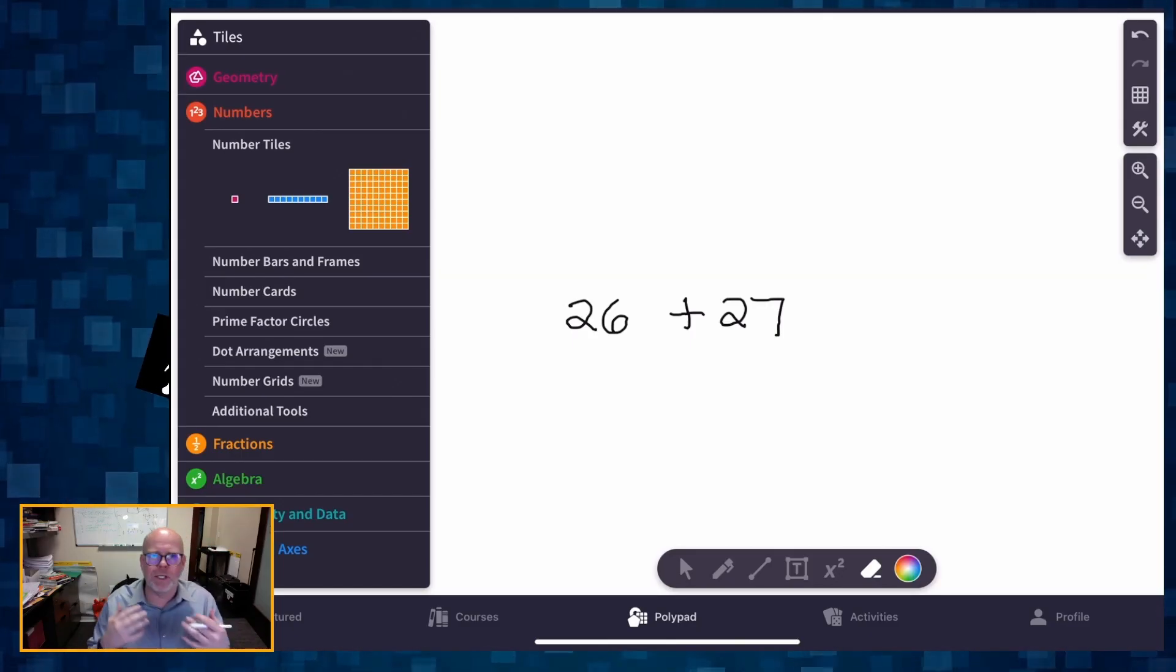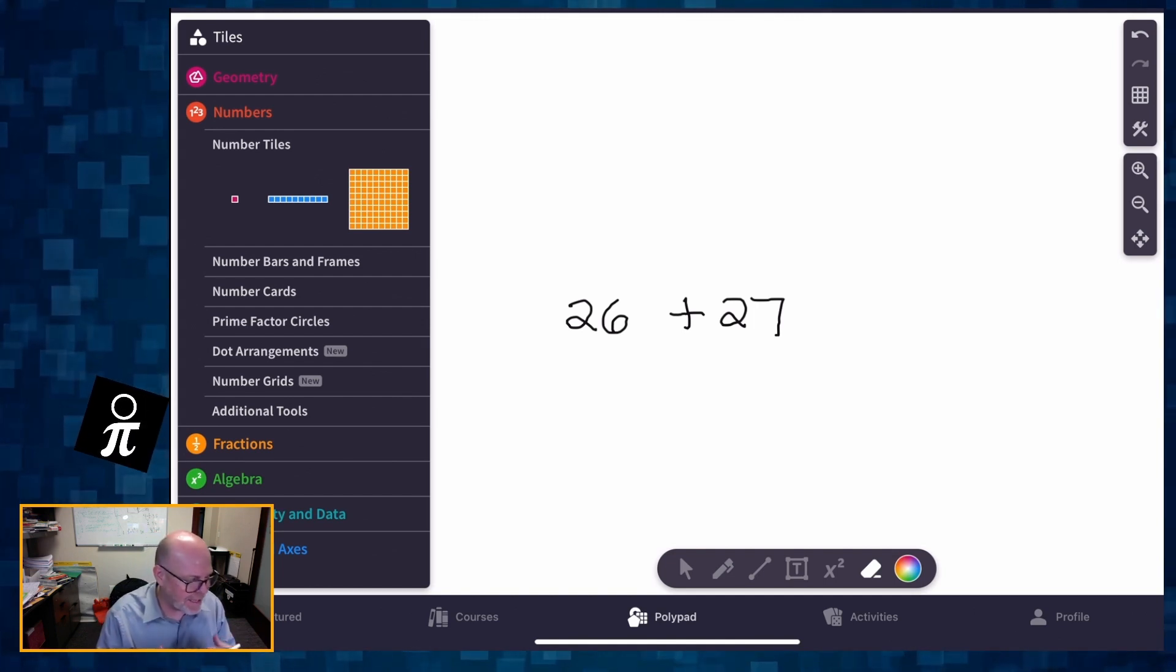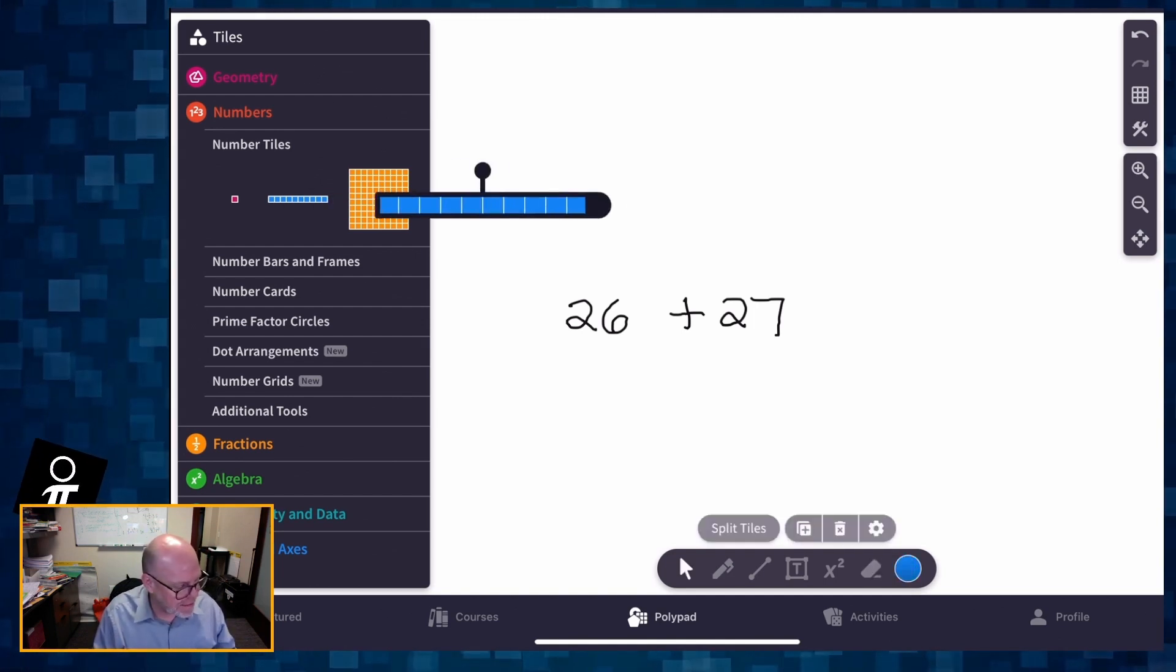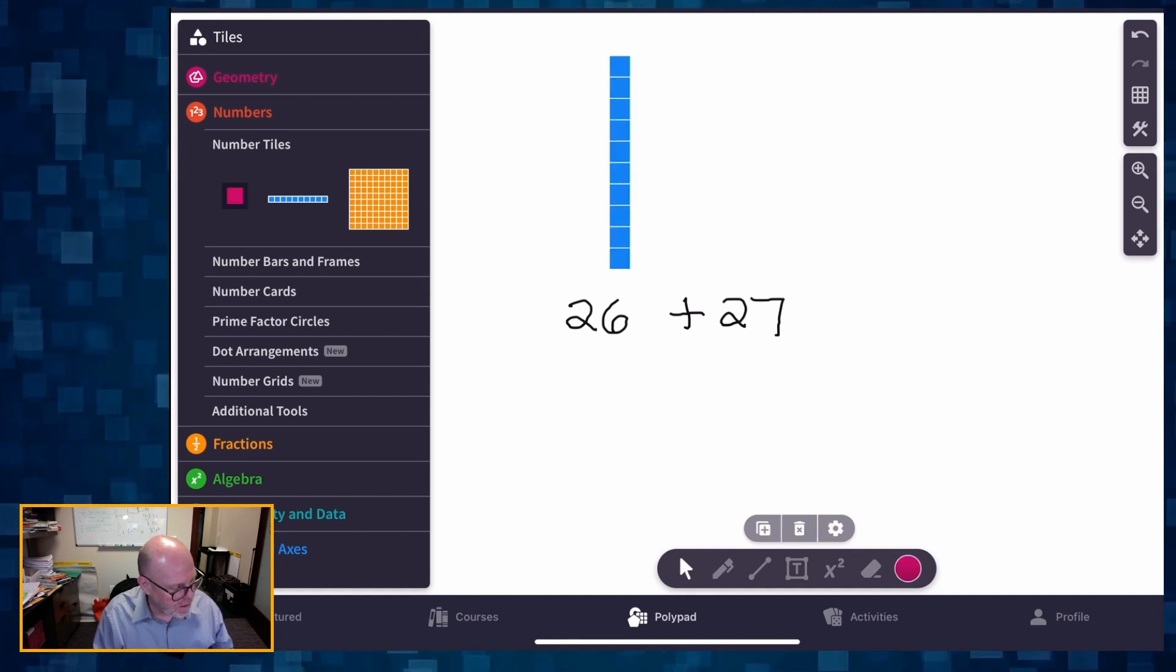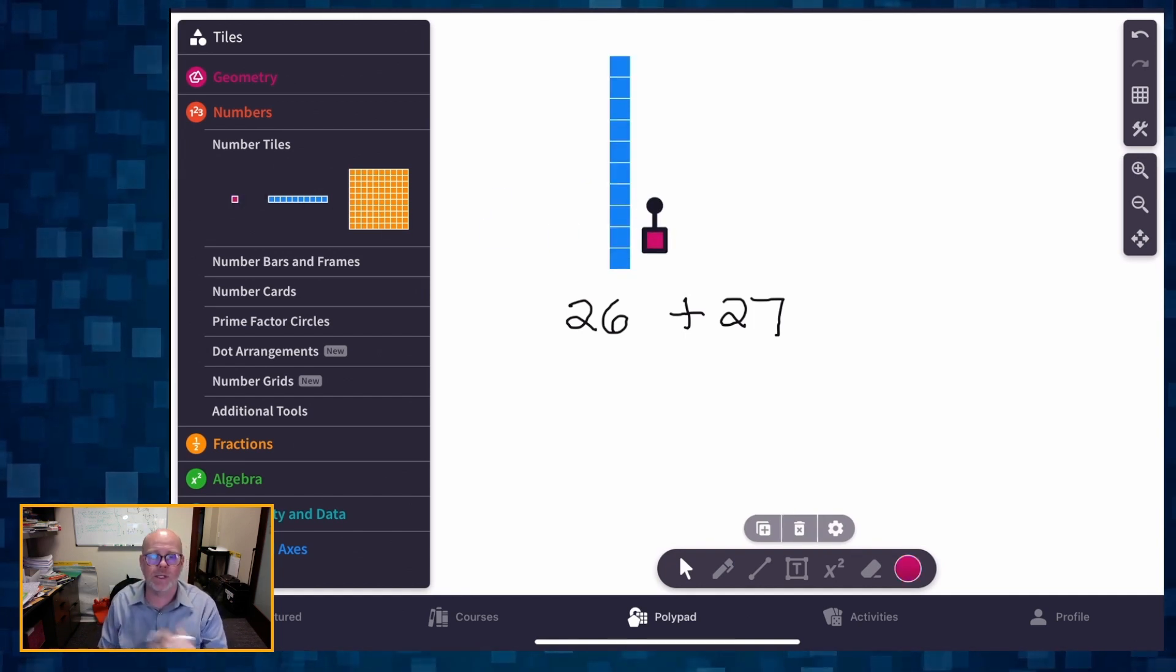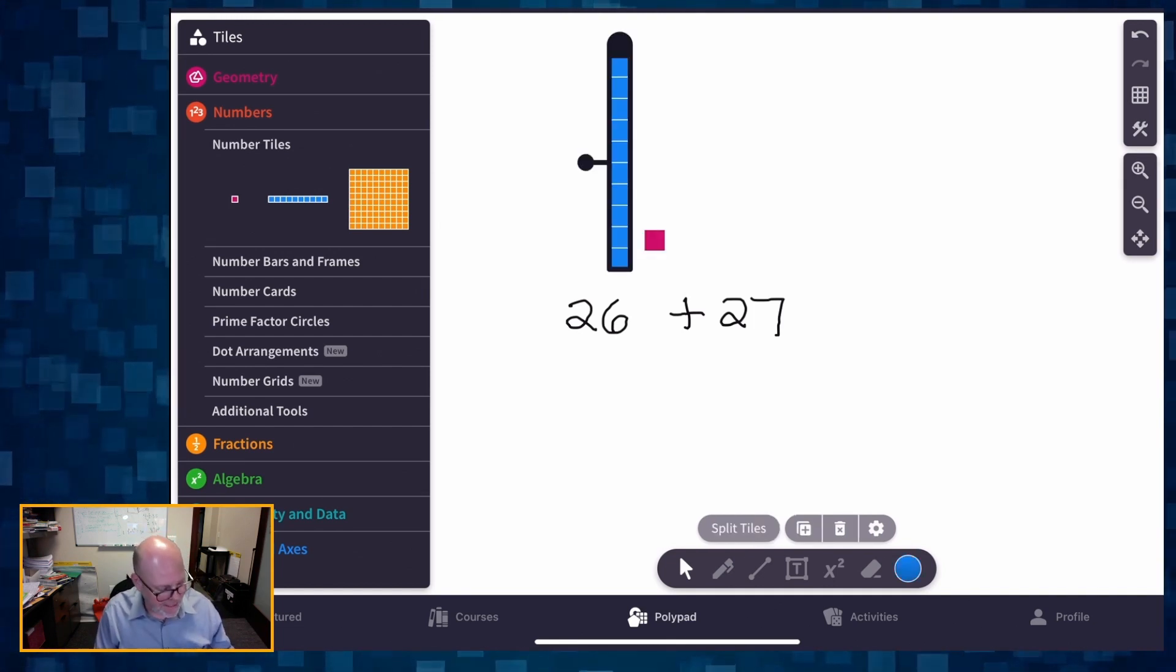Alright, so let's say we're going to build 26 plus 27. We're going to use base 10 blocks. So here's our 10, and these are our ones. So let's just really quickly build 26 plus 27.